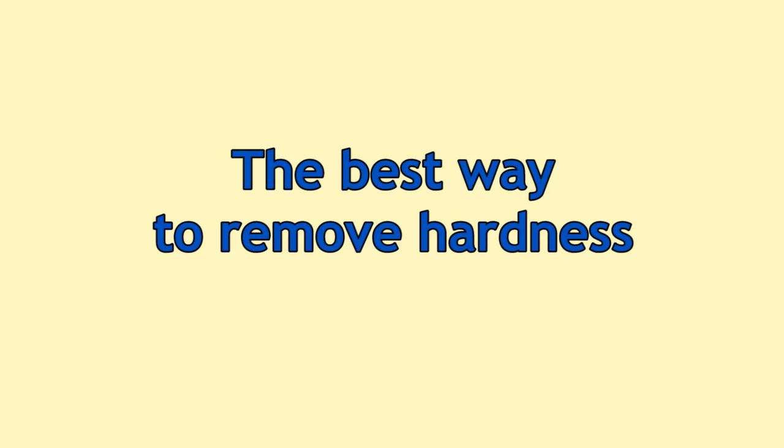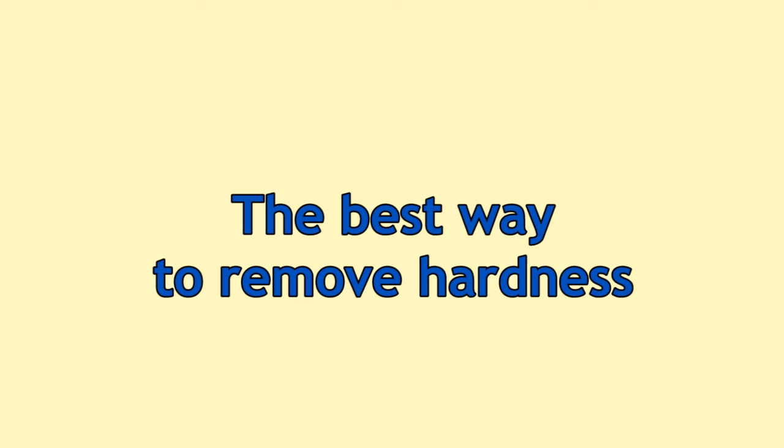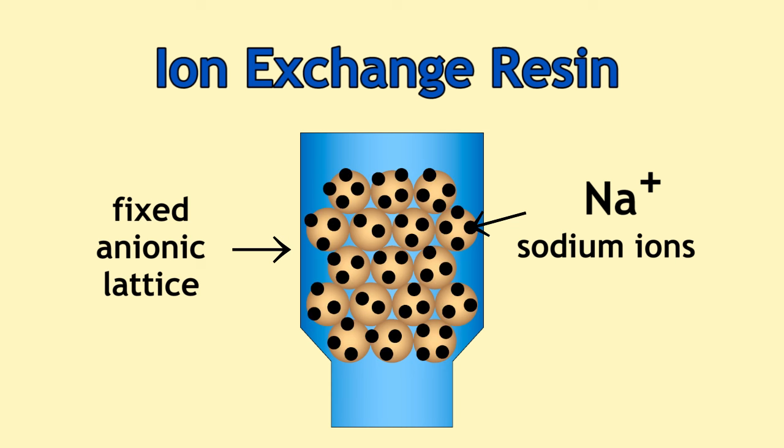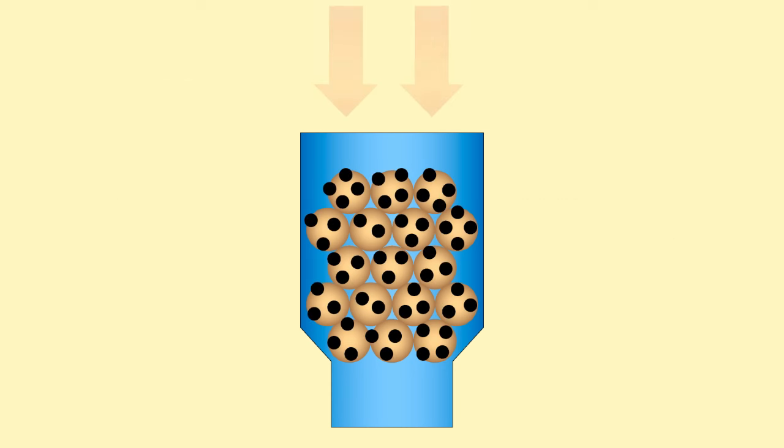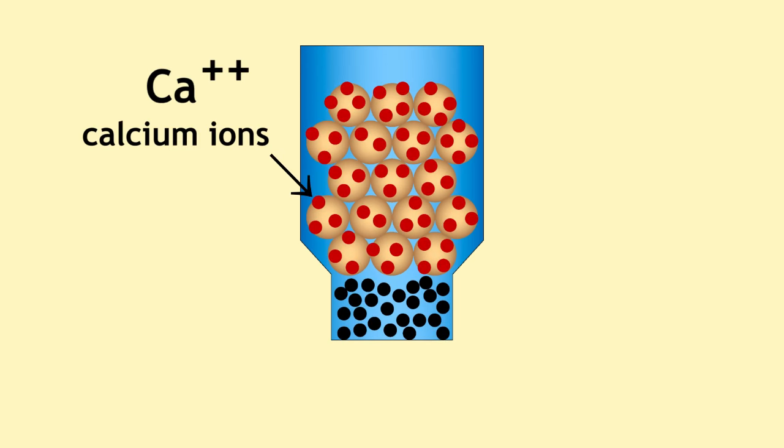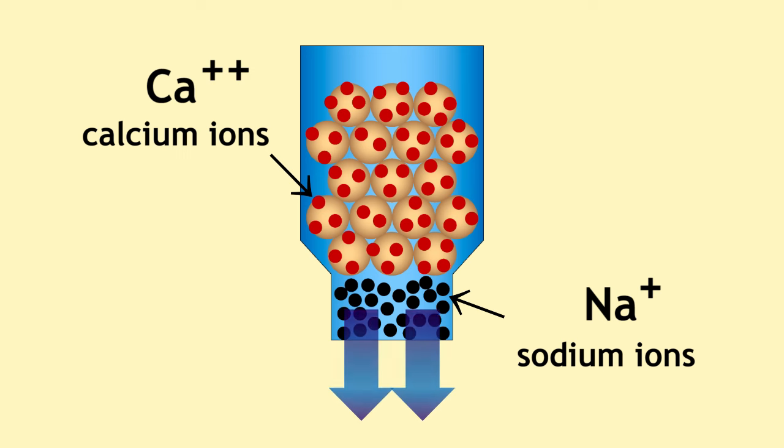The best way to remove hardness is actually to use something called an ion exchange resin. These have a fixed anionic lattice, a bit like clay, initially balanced by positive sodium ions. As hard water flows through, the calcium ions are exchanged for the sodium ions, so that the calcium ions stick to the clay and the sodium ions come out into the water. And in this way, the water is softened because the calcium is no longer there.